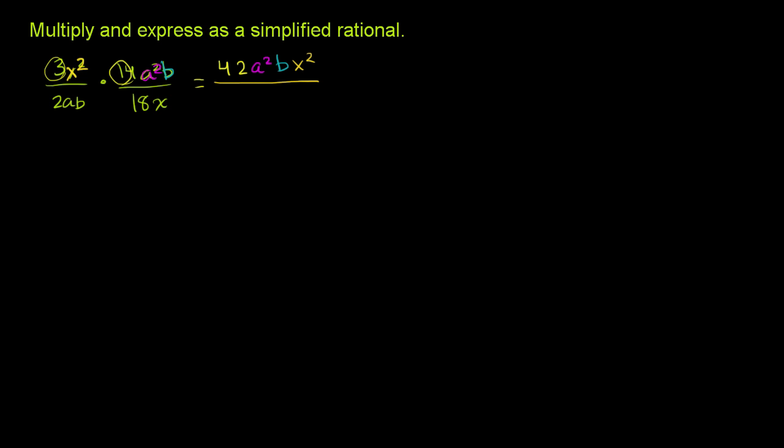And let's do the same thing for the denominator. So I'll first do the constant, or I should say the coefficients. So I'll multiply 2 times 18, which is 36. And then I have an a over here, just 1a. 36a. Then I have just 1b over here times b, and then I just have 1x over here times x.